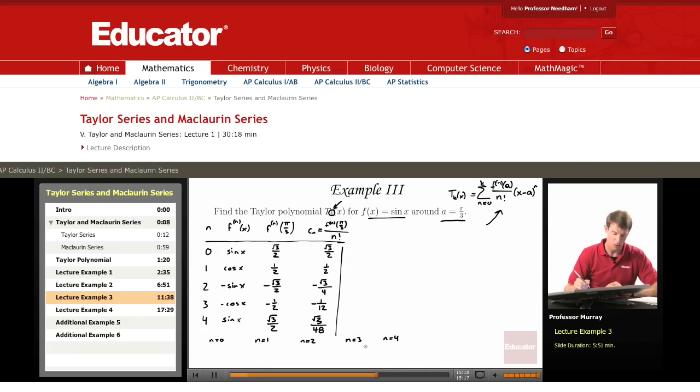The n equals 0 says you take √3/2—I'm getting that from here—and then you multiply by (x minus a) to the 0, which is just 0.